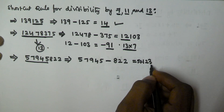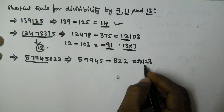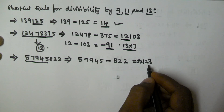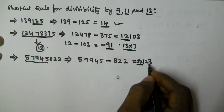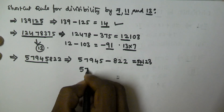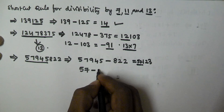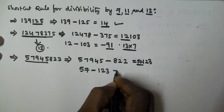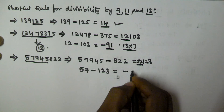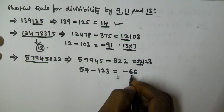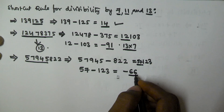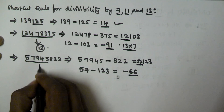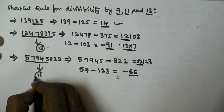Again, we do not know if 57123 is divisible by 11 or not. So we take all the digits except the last three digits, that is 57, and then subtract the last three digits, that is 123. If we subtract, we get minus 66. Ignore the negative sign — we know that 66 is divisible by 11. So that means the given number is divisible by 11.